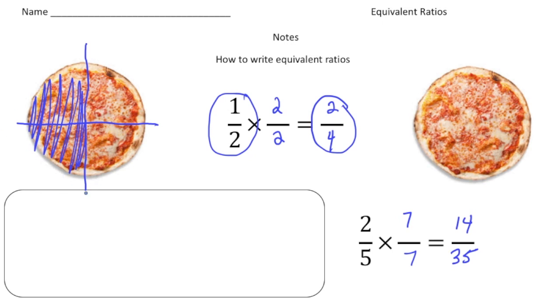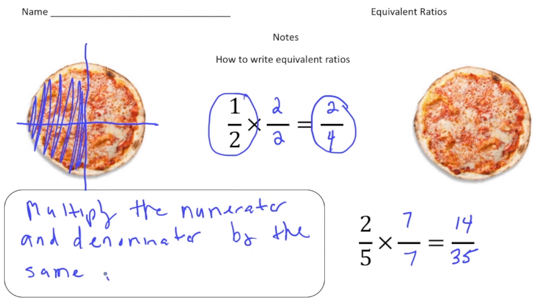So the rule I want you to write inside the box is, to write equivalent ratios, you multiply both the numerator and denominator by the same factor. So multiply the numerator and denominator by the same factor. And please underline the word same, that is key.